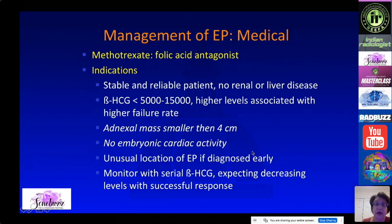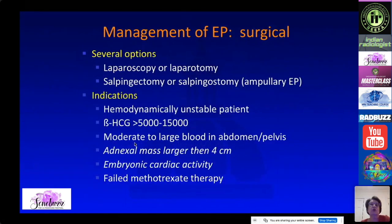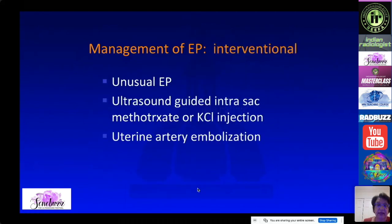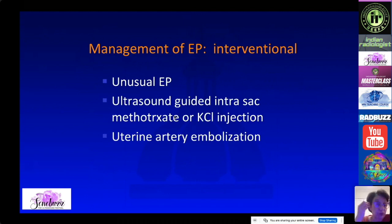Methotrexate is now a common option, avoiding surgery on the fallopian tube, provided the adnexal mass is smaller than 4 centimeters and there is no embryonic cardiac activity. It is also the management of choice for unusual locations such as cervical or interstitial ectopic pregnancy if diagnosed early enough. Laparoscopy or laparotomy is reserved for hemodynamically unstable patients, very large ectopic pregnancies, embryonic cardiac activity, or failed methotrexate. Interventional options include KCL injection to terminate the embryo or uterine artery embolization.